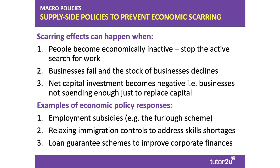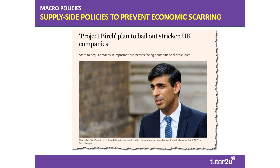Policy responses to prevent a fall in aggregate supply include employment subsidies such as the government's furlough scheme, expected to last between six and nine months. The government might also relax immigration controls to address skill shortages in certain industries. We've also seen loan guarantee schemes to improve corporate finances and reduce the risk of a surge in business failures. Another initiative being considered in the treasury is Project Birch, where the state decides to fund some equity stakes in key businesses facing acute financial difficulty — perhaps in transport or energy.